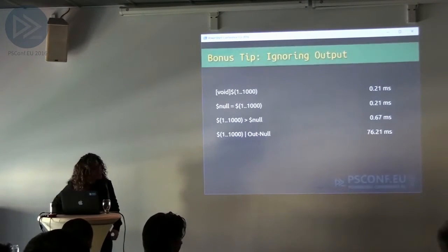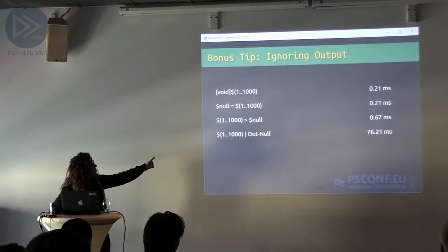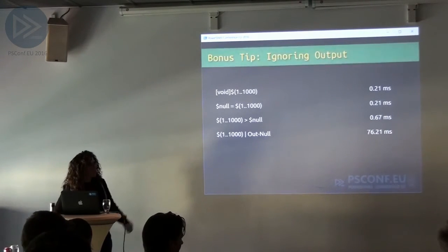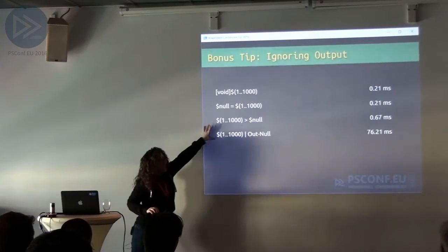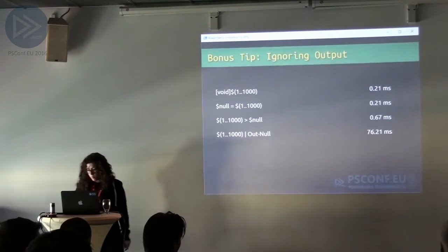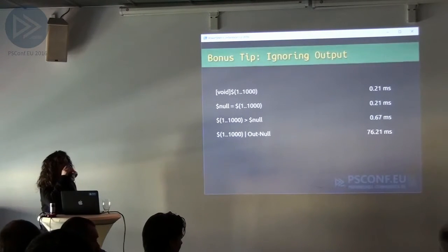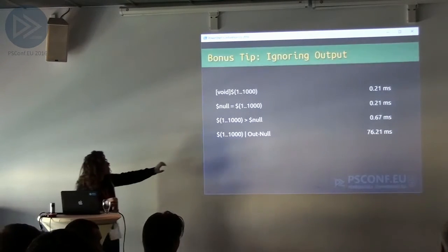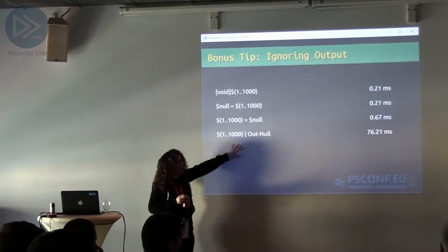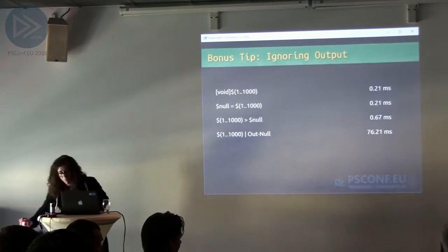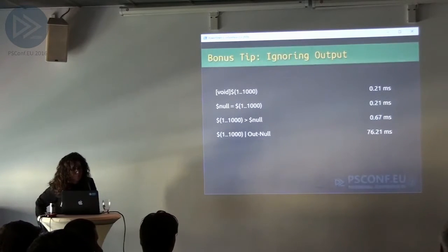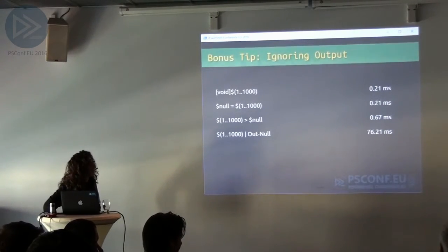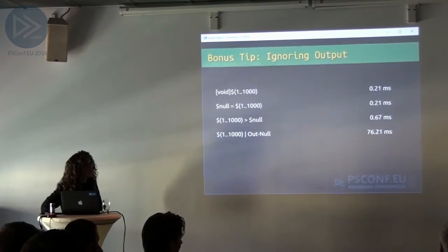That difference is actually a bug, because the redirection to null and Out-Null should be exactly equivalent to piping to Out-Null. When you do redirection in PowerShell, it rewrites the pipeline from redirect to a file or null to pipe into either Out-Null or Out-File. The fact that they're different is a bug. Out-Null and the redirection to null could, under the covers, be turning into different things. I suspect what's happened is that one piece has been optimized but not the other.